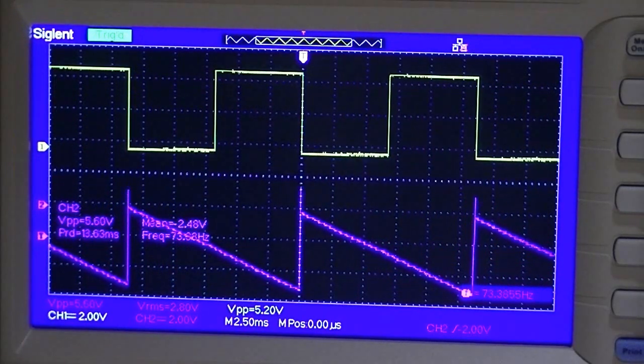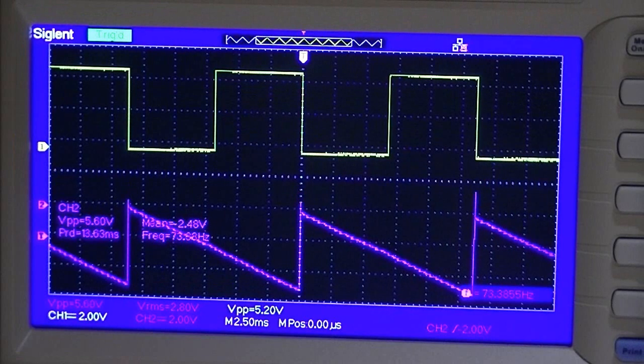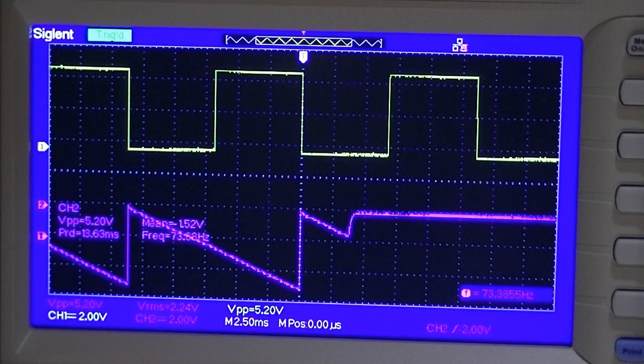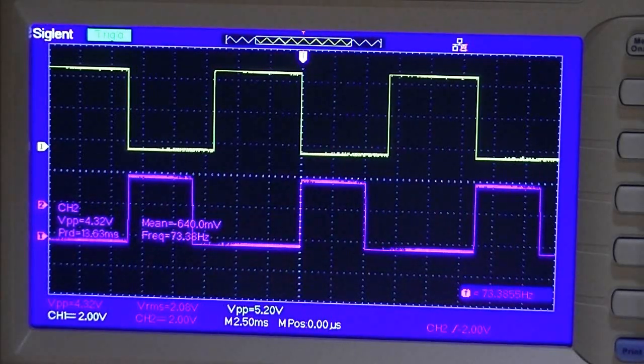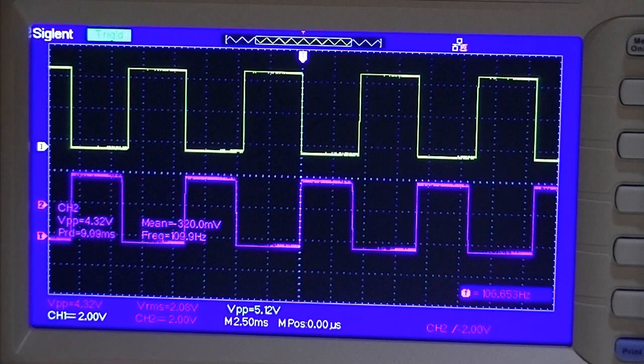The advantage of this is you can put it through a comparator with a CV input, and that would be your bottom one now, and you get a pulse width.